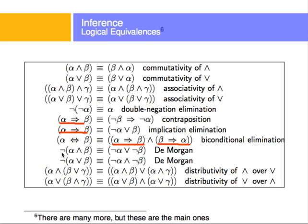There are De Morgan's laws. What happens if you have a negation of something AND something else? Well, that becomes the negation of the first literal OR the negation of the second one. The same thing for the inverse is true. There's also distributivity: if you have alpha AND two other variables — one variable OR another — you do alpha AND the first, OR alpha AND the second.